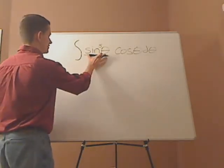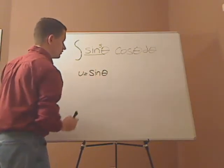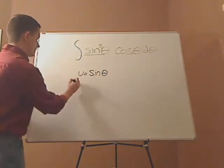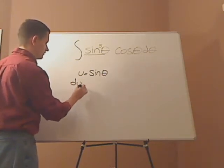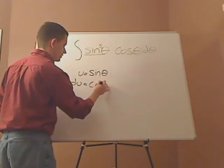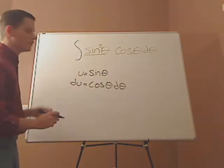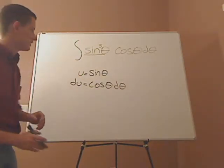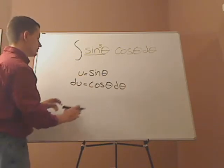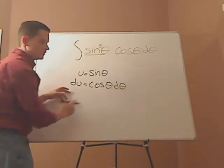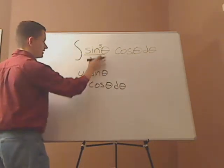So I'm going to substitute sine theta with u. And what is the derivative of sine theta? du equals cosine theta d theta. Now, what you can do is one or two things when you plug it in. Either you can just take this whole thing and plug it in, or you can solve for d theta, get the cosine over here, and replace d theta with this, and then sine theta with this.